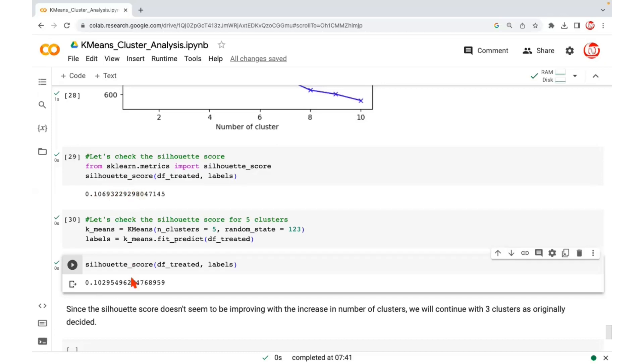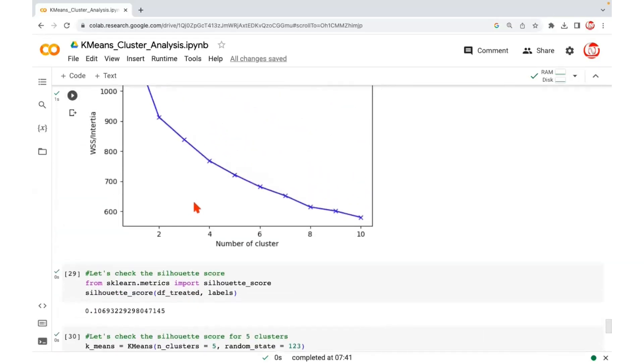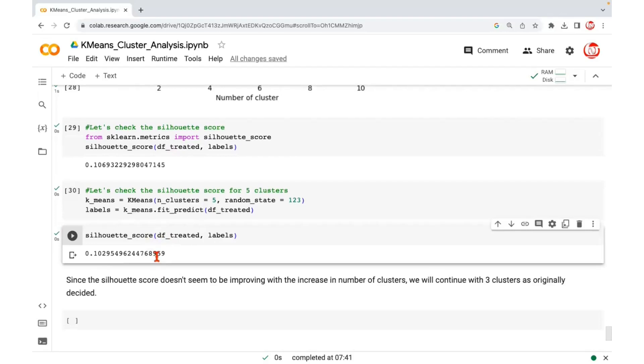Remember, for comparable output, always choose the simpler approach. Why would you want to create five clusters when three clusters are sufficient for you to work on? So that is it about deciding the number of clusters using two approaches, the elbow method and the silhouette score. Hope you had something meaningful to learn from this video. Thank you.